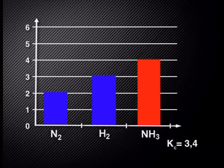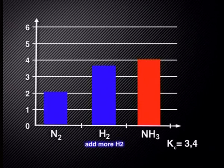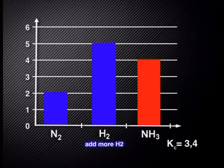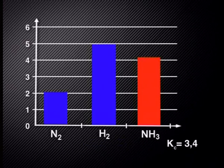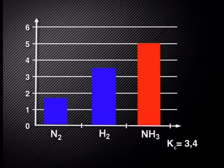Here we have the concentrations of hydrogen, nitrogen, and ammonia, with a Kc value of 3.4. When we add more hydrogen, the forward reaction is favored — the concentration of ammonia increases as the concentrations of hydrogen and nitrogen decrease. The Kc still works out to be 3.4.